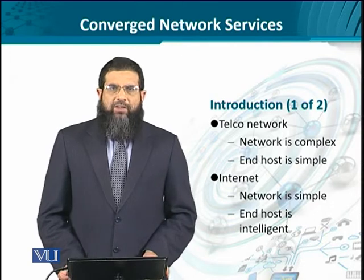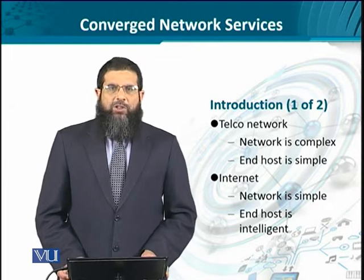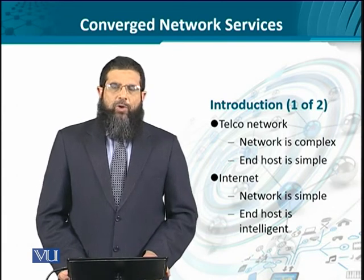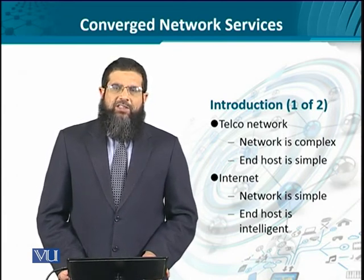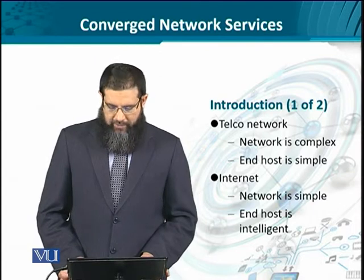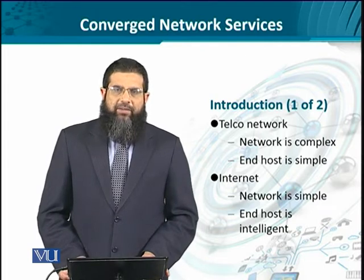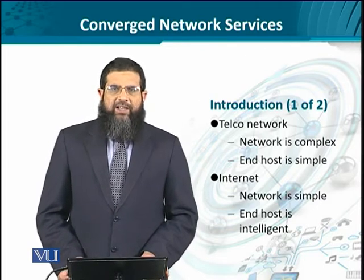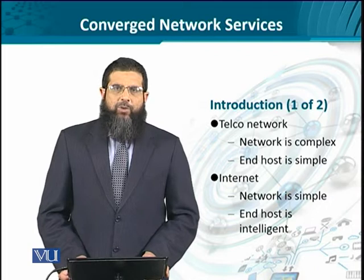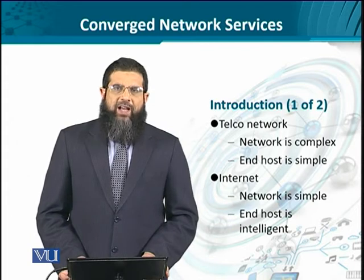On the contrary, in the case of the internet, since it is based on simplicity, the network is supposed to do simple things to data coming from hosts. For instance, a router — which is a layer 3 device — is the most dominating network element at the core of the internet. The router is only layer 3, whereas the end host is layer 7. So in the case of the internet, the network is very simple and the end host is expected to have all the intelligence to ensure that whatever is sent from one end is received as such on the other end.